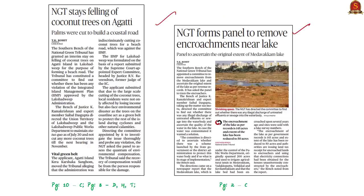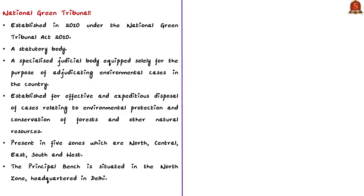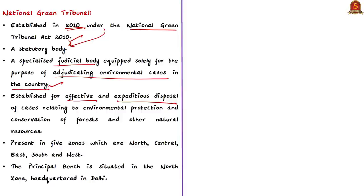These two news articles are with reference to recent orders given by the National Green Tribunal, or NGT. NGT was established in 2010 under the National Green Tribunal Act of 2010, making it a statutory body. It is a specialized judicial body equipped solely for the purpose of adjudicating environmental cases in the country, concerned with effective and expeditious disposal of cases relating to environmental protection, conservation of forests, and other natural resources. The tribunal has a presence in five zones — North, Central, East, South, and West — with the principal bench located in the North Zone, headquartered in Delhi.